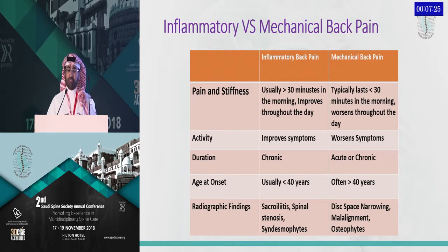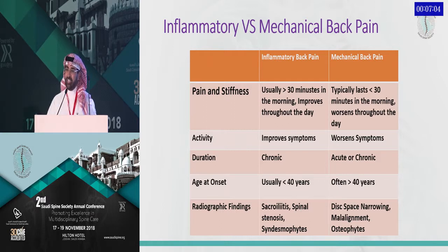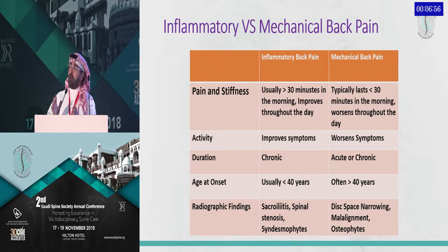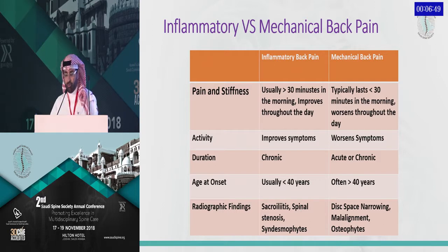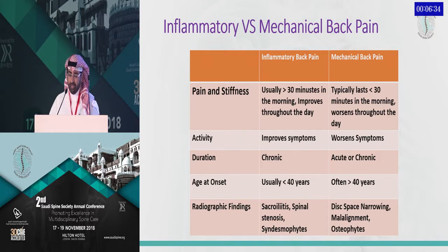It's really important to know the difference between inflammatory versus mechanical back pain. The pain and stiffness is more characteristic in inflammatory back pain — stiffness lasting more than 30 minutes — which is not the case in mechanical back pain, where stiffness is usually short-lived. Activity improves symptoms in inflammatory back pain while it worsens them in mechanical back pain. Age at onset is important because most spondyloarthritis affects younger populations, typically below age 40, unlike mechanical back pain where older patients are more common. Radiographic findings of sacroiliitis and syndesmophyte formations are characteristic for spondyloarthritis, distinct from degenerative spine disease.